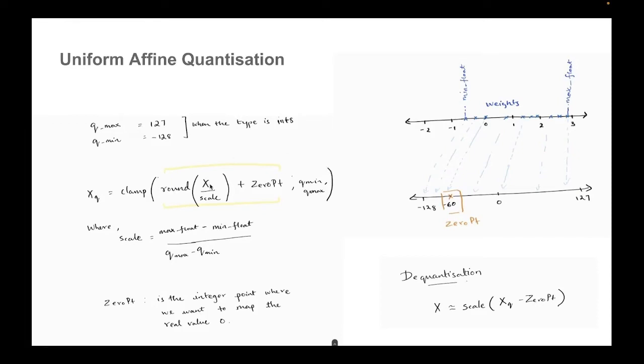Qmax and Qmin is the maximum and the minimum integer that can be expressed using int8. Now, this is the transformation function. Before we go into the transformation function, let's define a few more terms. X is the floating point value that you want to map. Xq is the quantized version of this floating point value, which is expressed as an integer. So you want to go from X to Xq and Xq to X. So in this mapping function, we see scale and zero point. So let's define those as well.